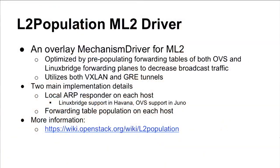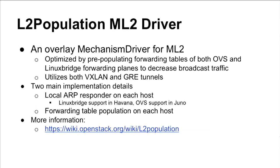There are actual production public cloud deployments working with what's known as the L2 population driver. One of the original problems with the reference architecture was the use of flooding and broadcast traffic. If you know the logical state of the network, you can pre-populate the forwarding tables for both OVS and Linux Bridge, whether using VXLAN or GRE. To implement this, we implemented a local ARP responder — ARP being Address Resolution Protocol, the mechanism by which your computer figures out how to talk to another station on the network.